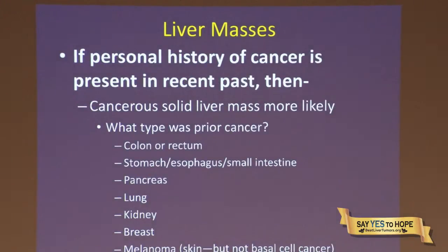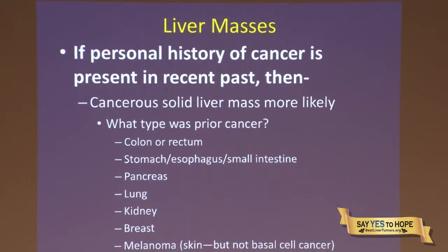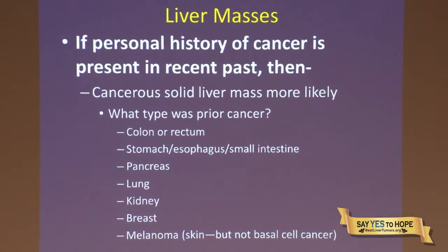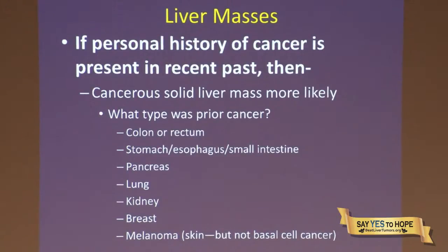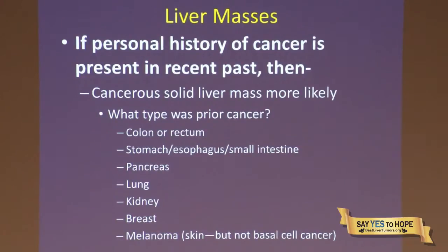If there is a personal history of cancer in the recent past — roughly within the last ten years or so — then a cancerous solid liver mass is more likely. The more common cancers that spread to the liver include colorectal, stomach, esophagus, small intestine, pancreas, lung, kidney, breast, and melanoma specifically — not basal cell cancer, which generally doesn't spread unless left alone for years.